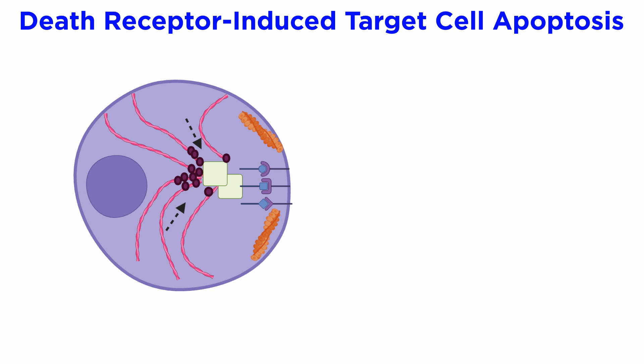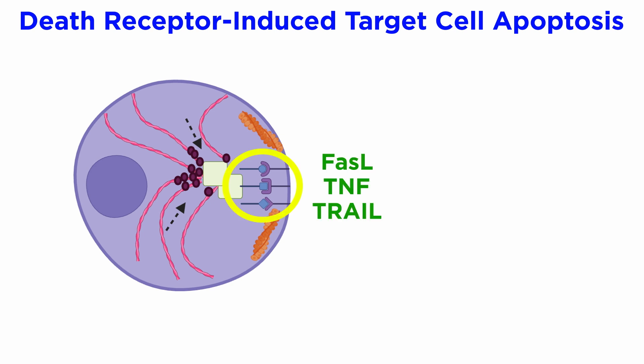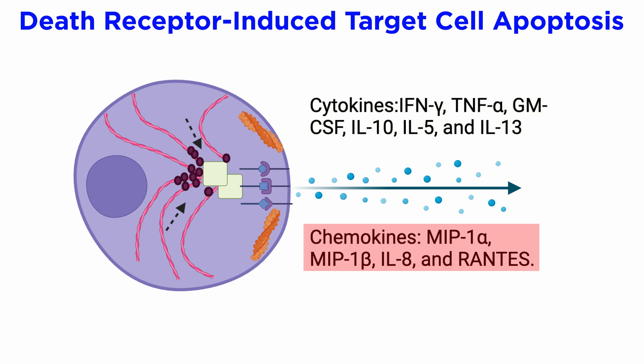Another process by which NK cells mediate the killing of target cells involves death receptor-induced target cell apoptosis. Engagement of the death receptor with its cognate ligand induces a conformational change in the receptor and recruitment of adapter proteins, leading to apoptosis of target cells. NK cells express FAS-L, TNF, and TRAIL receptors that bind to their respective ligands on the target cells. Furthermore, activated NK cells secrete a wide variety of cytokines such as interferon gamma, TNF-alpha, GM-CSF, IL-10, IL-5, and IL-13, as well as chemokines such as MIP-1-alpha, MIP-1-beta, IL-8, and Rantes.